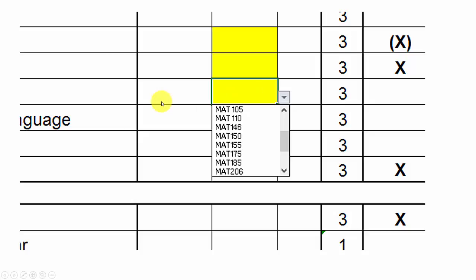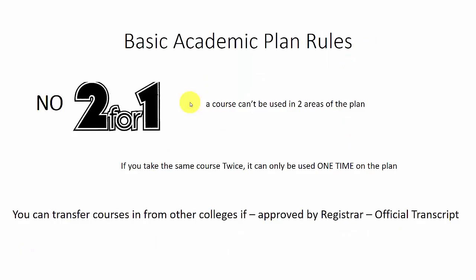If you think you might transfer to a four-year school, I would strongly suggest you take a math class that will transfer. The most common transferable math class is MAT 150, College Algebra. Try to make sure that's the math class you take if you think you're going to transfer, and put it in the math section.